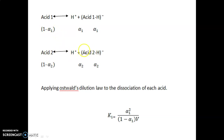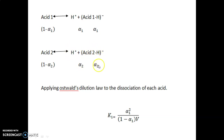Similarly for acid 2: it gives H⁺ and the negative conjugate base part. Acid 2 loses a proton, and this conjugate base attains a negative charge. The concentration of H⁺ is alpha 2, the concentration of the negative part is alpha 2, and the concentration of remaining acid 2 is 1 minus alpha 2.